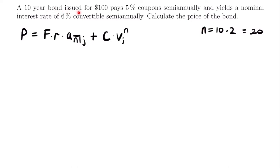The bond is issued for $100, so the face value F equals $100. That also tells us that the redemption value C equals $100, since F and C are equal unless stated otherwise, and the problem doesn't mention a different redemption value.